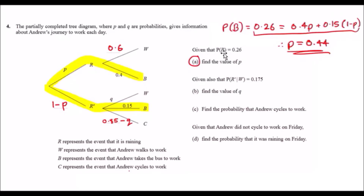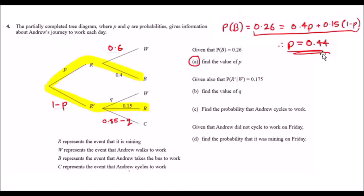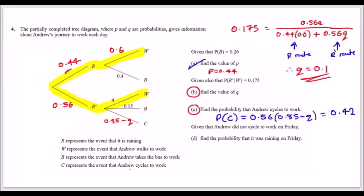Given that P(B) = 0.26, find p. Every route ending at B must be combined: P(B) = p × 0.4 + (1 − p) × 0.15 = 0.26. Expanding and solving: 0.4p + 0.15 − 0.15p = 0.26, so 0.25p = 0.11, giving p = 0.44.